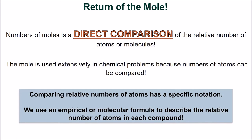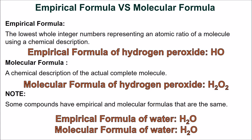Numbers of moles is a direct comparison of the relative number of atoms or molecules. The mole is used extensively in chemical calculations and experiments because numbers of atoms can be compared. Comparing relative numbers of atoms has a specific notation. We use an empirical, or molecular, formula to describe the relative number of atoms in each compound. An empirical formula is the lowest whole integer numbers representing an atomic ratio of a molecule. To calculate the empirical formula of a compound, find the smallest whole number molar ratio between the constituent atoms and write the ratio using the chemical symbols of the atoms.